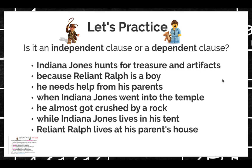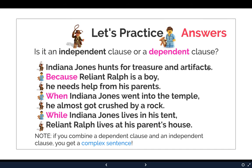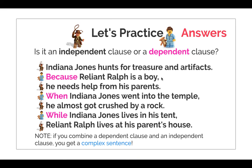Okay, let's review the answers. 'Indiana Jones hunts for treasure and artifacts' — that is an independent clause and it's a sentence by itself. 'Because Reliant Ralph is a boy' — that is a dependent clause with a subordinating conjunction, so it needs to be connected to an independent clause. 'He needs help from his parents' — we connect these two and we have a complex sentence: 'Because Reliant Ralph is a boy, like a child, he needs help from his parents.'